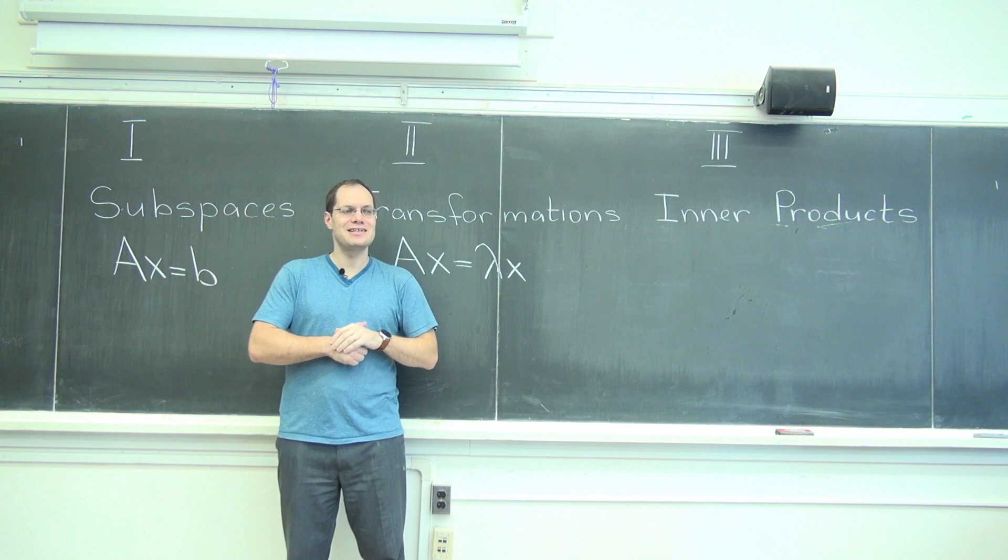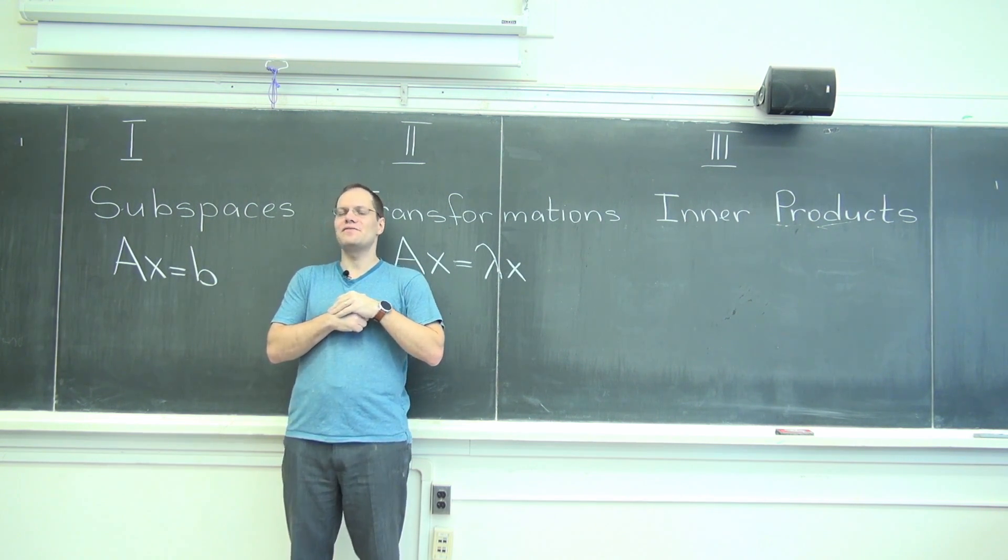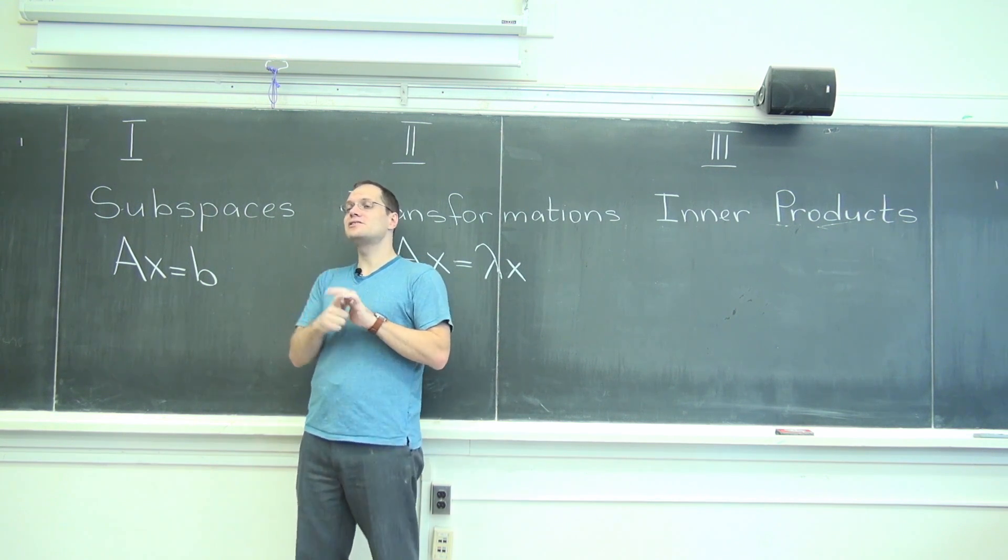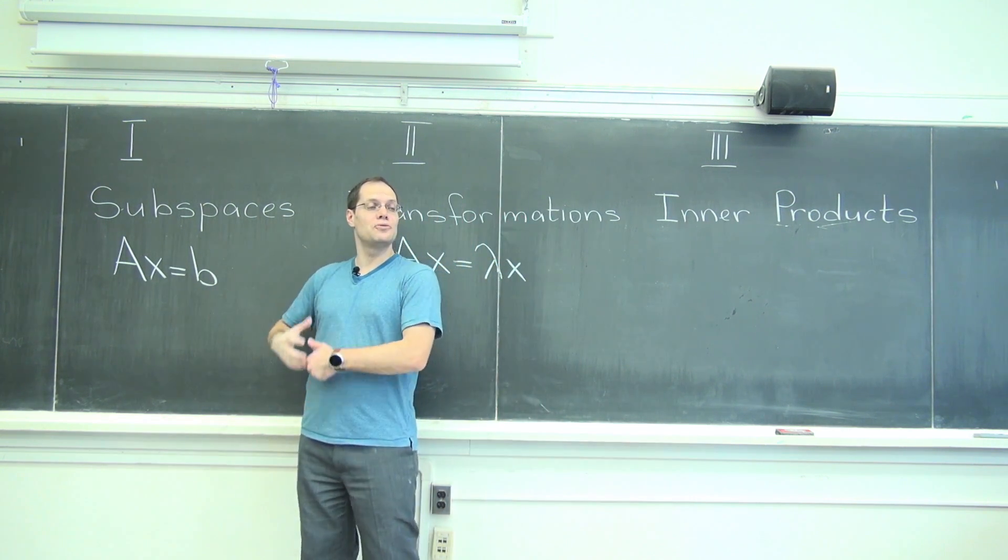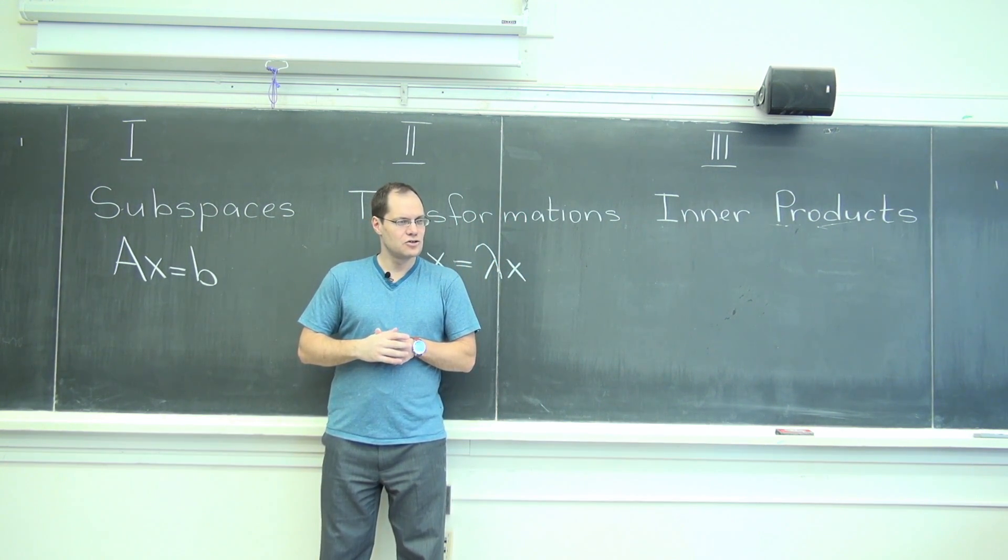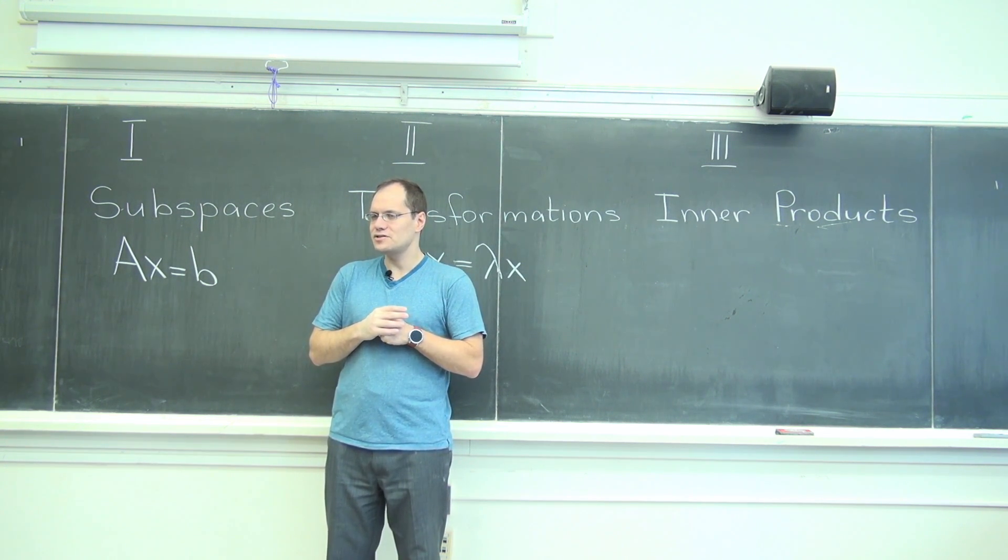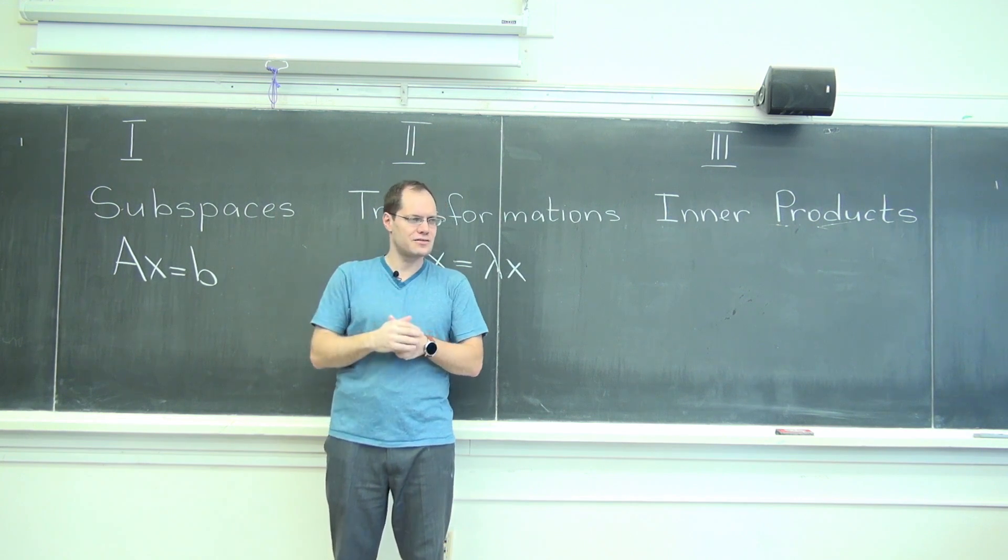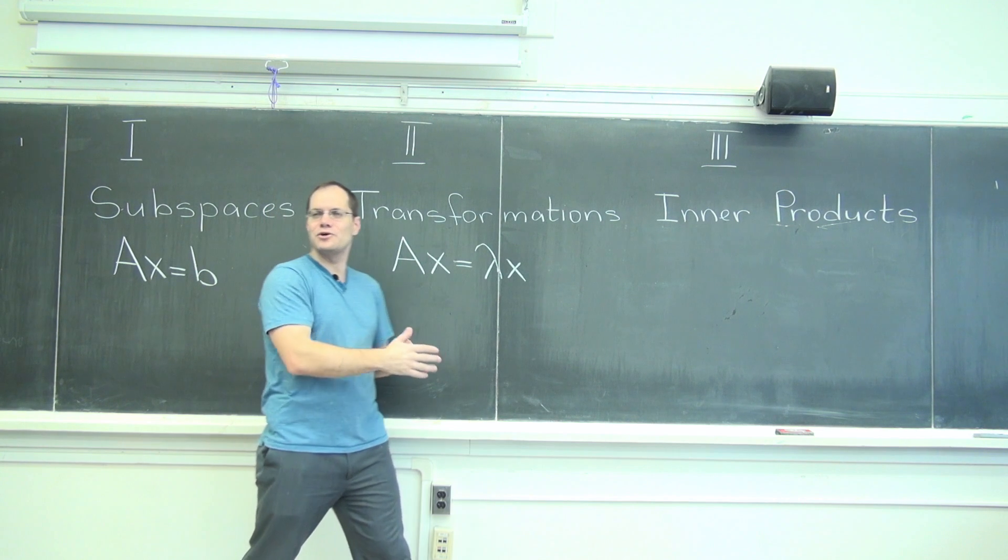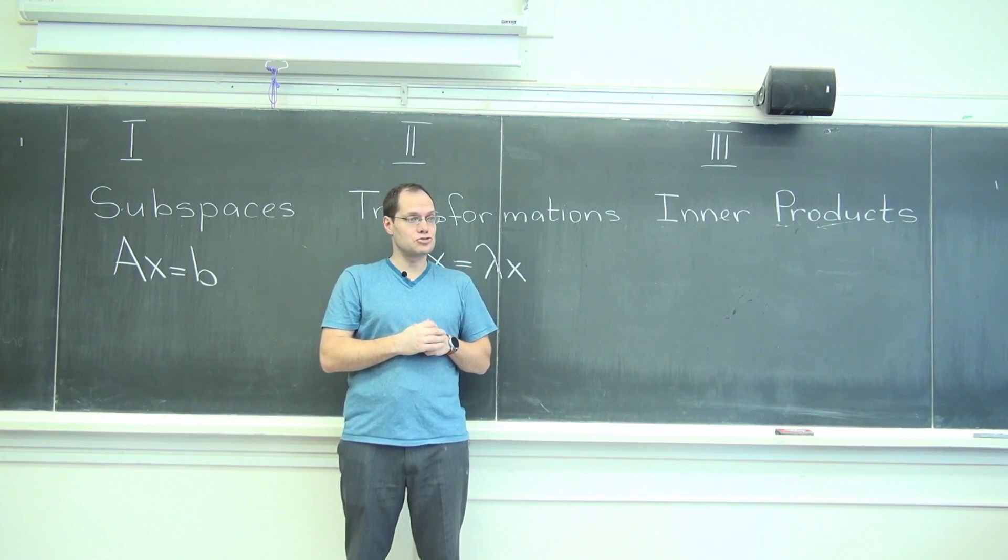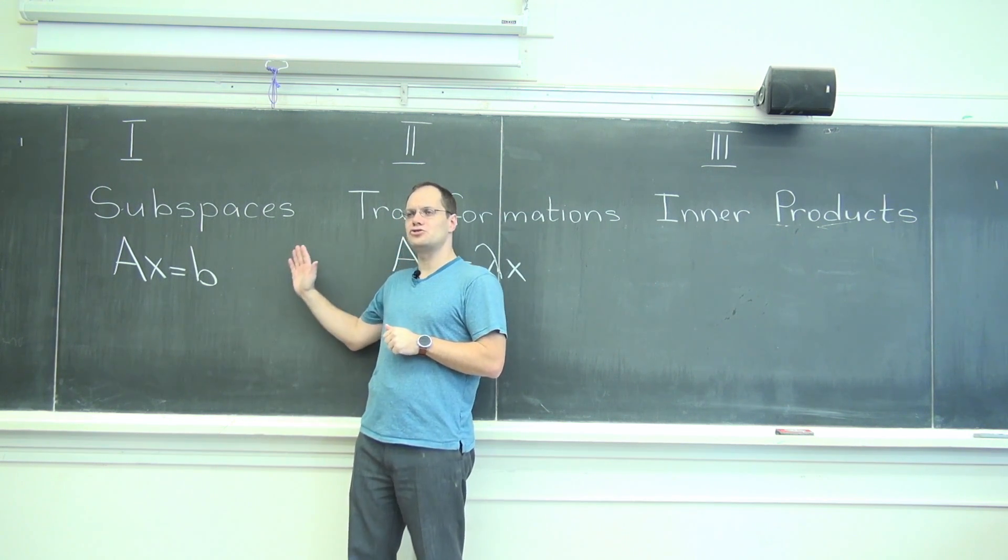So conspicuously absent is the notion of length. We have never, ever mentioned length. And you might disagree with that and say, but remember, in each one of these examples when you talked about geometric vectors, you would use length and also orthogonality and angles. So you did say length. You said rotation preserves the length, or you said reflection is when you flip it the other way and it's the same length. You did say length. And it's true.